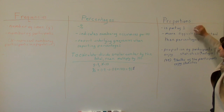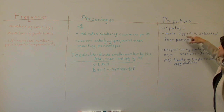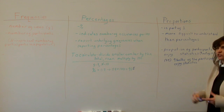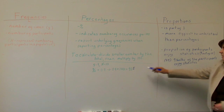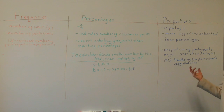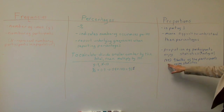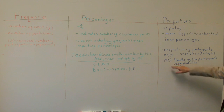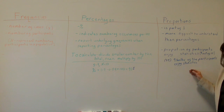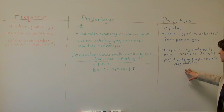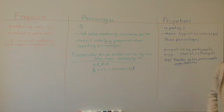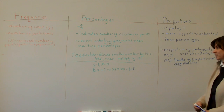Now let's go to proportions — it's part of one. This is more difficult to understand than percentages for people. For example, the proportion of participants who enjoy statistics is 9 out of 10, which is 9 tenths, or 0.9. That's a little harder for people to understand than saying 90 percent enjoy statistics.